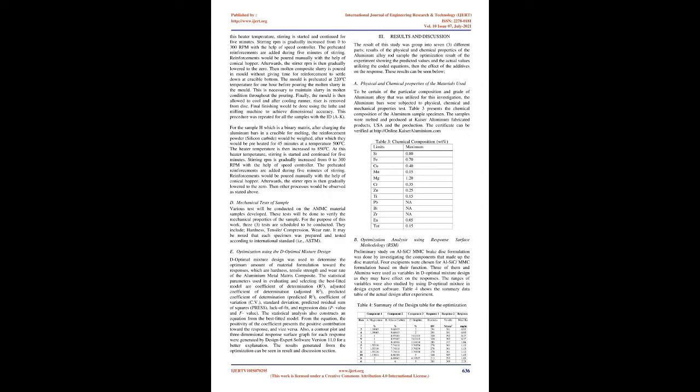This procedure was repeated for all samples with IDs A–K. For sample H, which is a binary matrix, after charging the aluminum bars in a crucible for melting, the reinforcement powder — silicon carbide — would be weighed and preheated for 45 minutes at 500°C. The heater temperature is then increased to 850°C. Stirring is started and continued for 5 minutes, and stirring RPM is gradually increased from 0 to 300 RPM. The preheated reinforcements are added during 5 minutes of stirring and poured manually with the help of a conical hopper. Afterwards, the stirrer RPM is gradually lowered to zero, and then other processes are observed as stated above.